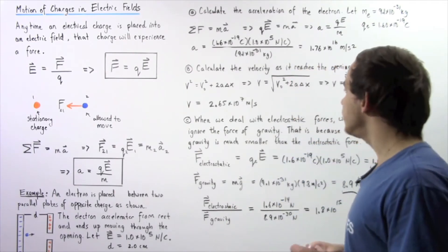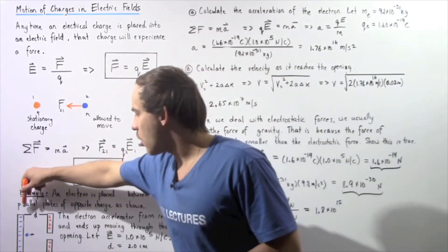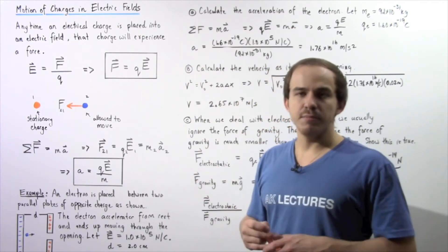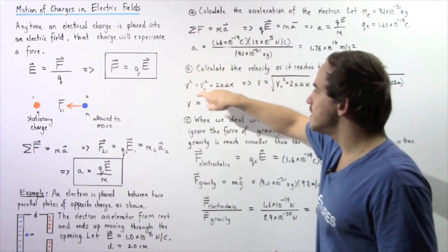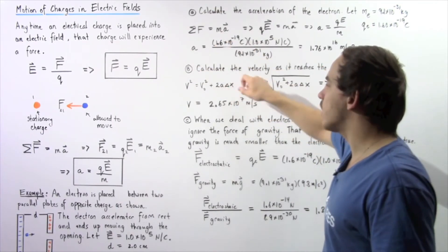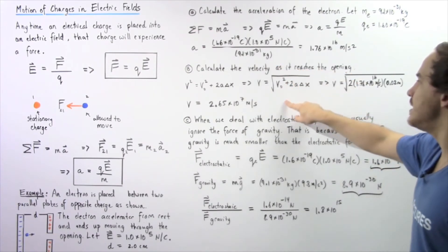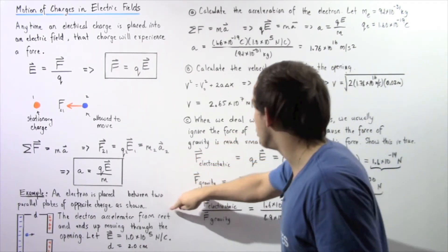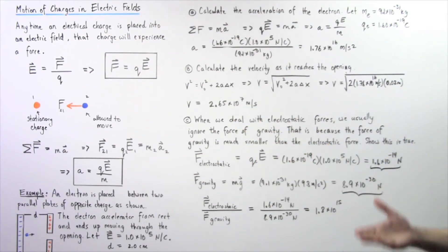For Part B, we calculate the velocity as the electron reaches the opening. The electron travels a displacement d between the plates. Because the electric field is constant, the force and acceleration are constant, so we apply the kinematics equation: v² = v₀² + 2a·d. Since the electron starts from rest, v₀ = 0. Substituting the acceleration from Part A and the displacement, we take the square root and get a final velocity of approximately 2.65×10⁷ m/s.